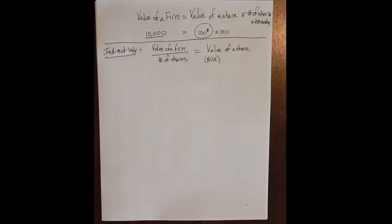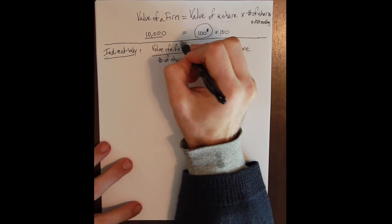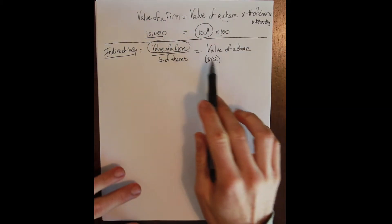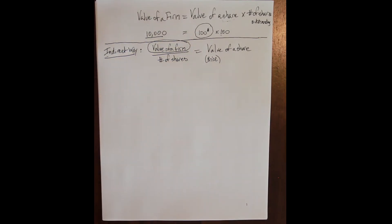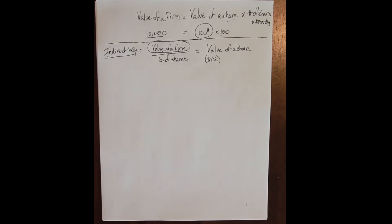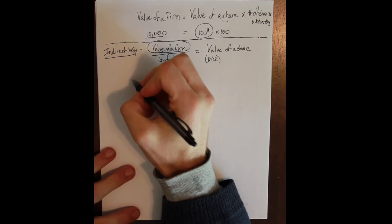In the indirect method, what we value is the firm itself, and the result of that process is the value of the share. The value of anything is simply the present value of its future cash flows, and for a firm the cash flows we are interested in are the cash flows from assets discussed in chapter two. So we value the firm by computing the present value of future cash flows from assets. We really only know two ways to value those cash flows for a firm.